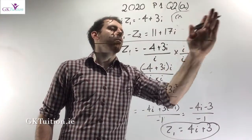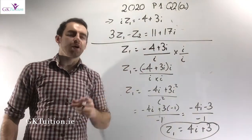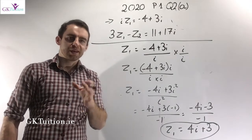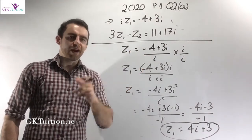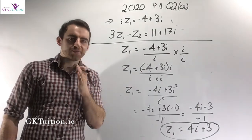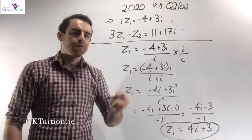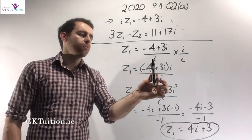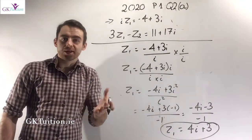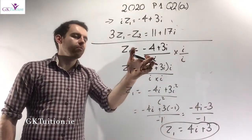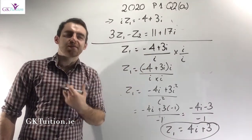When I've got z1 equal to minus 4 plus 3i over i, the problem is there's an i on the bottom of a fraction. If you have an i on the bottom of a fraction, in order to get rid of the imaginary number on the bottom, you multiply the top and the bottom by i. Because if I multiply the bottom by i, it becomes i squared and eventually minus 1, so there'll be no more imaginary number on the bottom.